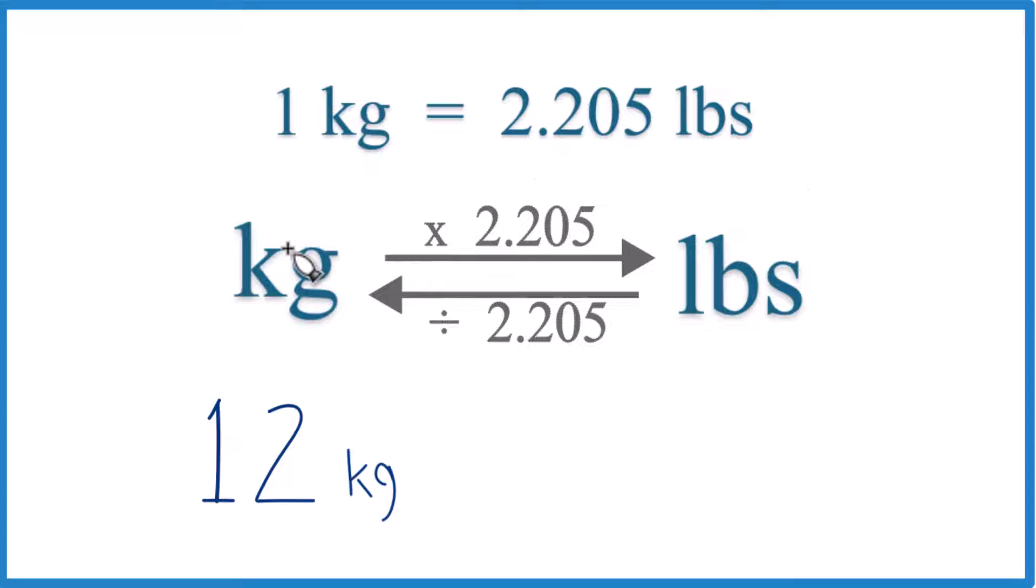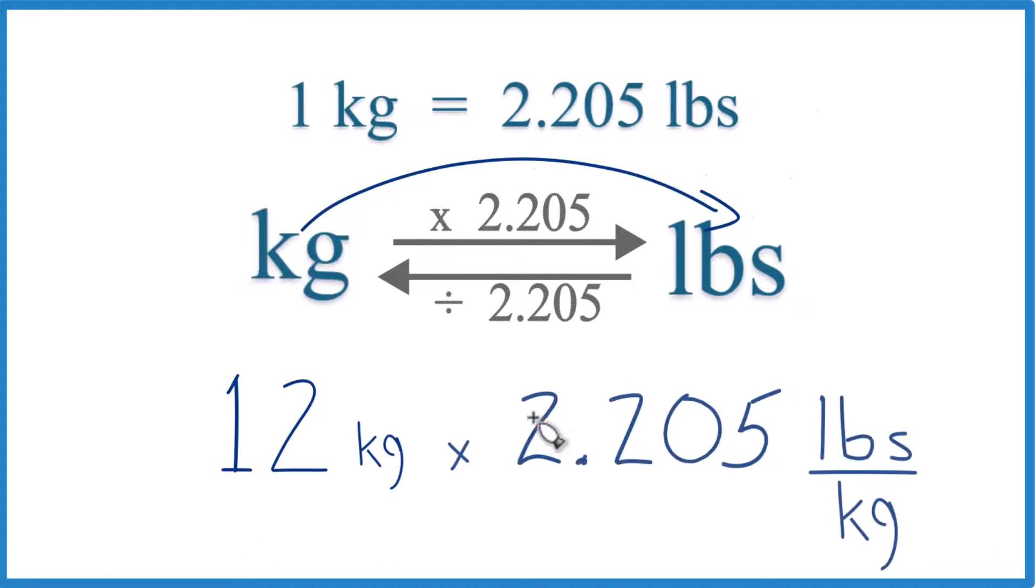Since we have 12 kilograms, we're going to multiply by 2.205 to get to pounds. So 12 kilograms times 2.205, and that's pounds per kilogram. That comes from our conversion factor. We have kilograms on top and kilograms on the bottom. They cancel out, left with pounds. That's what we're looking for.